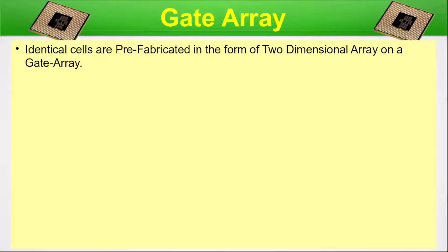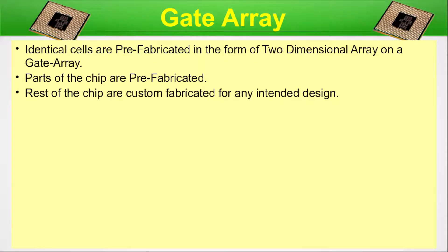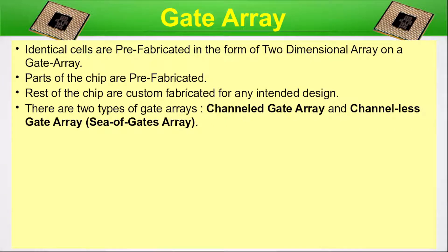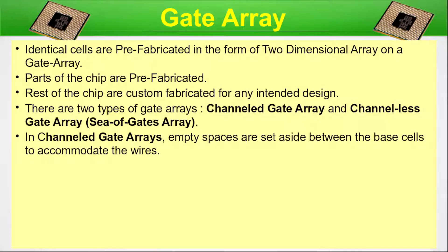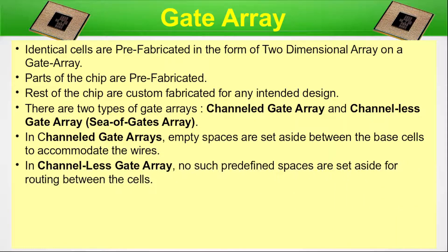Gate array. Identical cells are prefabricated in the form of a two-dimensional array on the gate array. Parts of the chip are prefabricated while the rest are custom fabricated for the intended design. There are two types: channeled gate array and channelless gate array, also known as sea-of-gates. In channeled gate arrays, empty spaces are set aside between the base cells to accommodate the wires. In channelless gate arrays, no such predefined spaces are set aside for routing between the cells.